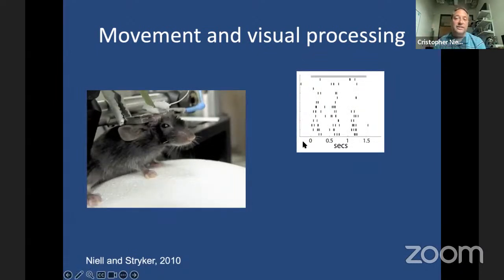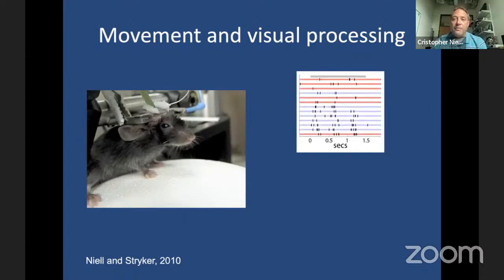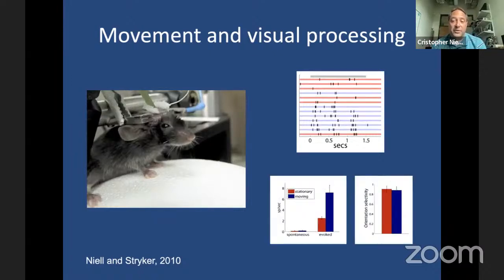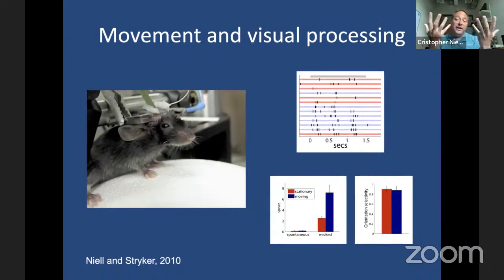This is repeated trials showing the same grating stimulus over and over — this neuron fires spikes on every presentation. But if we color code by periods when the mouse was sitting still in red versus moving in blue, this neuron fired about twice as many spikes when the animal was moving versus sitting still. This was true of the majority of neurons recorded in layer 2-3: roughly a doubling of the visually evoked response with relatively little change in orientation selectivity — a gain modulation, basically turning up the volume on the visual system when they started moving.